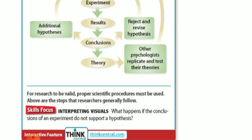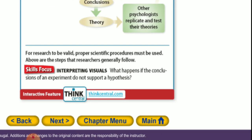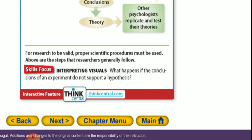For research to be valid, proper scientific procedures must be used. Above are the steps that researchers generally follow. The following question is very important. What happens if the conclusions of an experiment do not support a hypothesis?